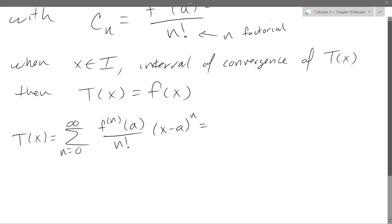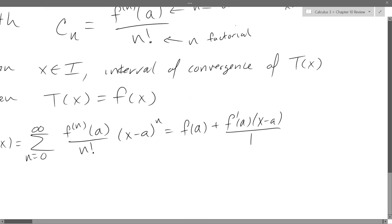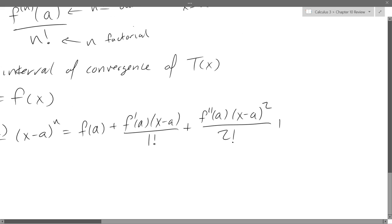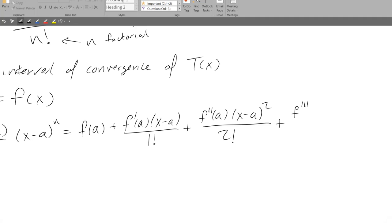The n equals 0 term: the zeroth derivative is just the function itself. So that term is just f(a), since 0 factorial is 1 and x minus a to the 0 is also 1. The n equals 1 term is f prime at a times x minus a to the first, divided by 1 factorial. The n equals 2 term is the second derivative at a times x minus a squared, divided by 2 factorial.